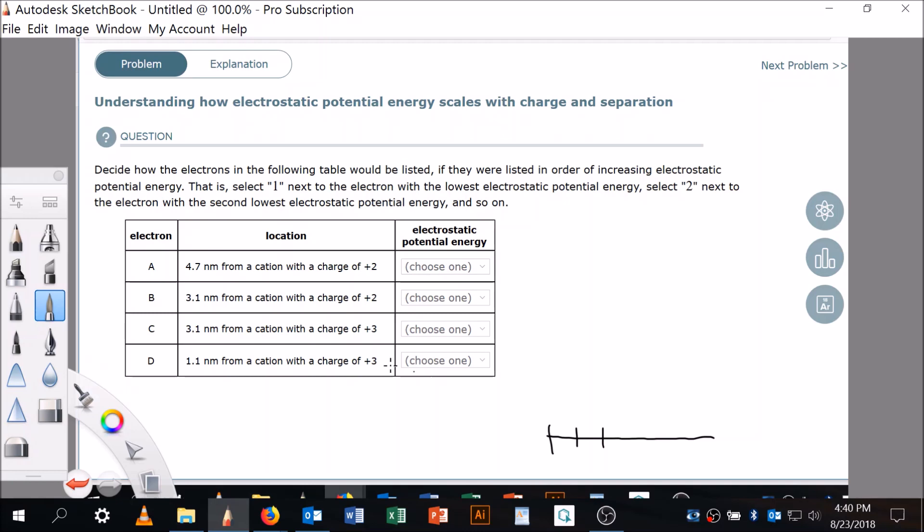It's 1.1, so it looks like I've got—decide how electrons in the following table would be listed. So in this one I've got an electron, which I'm going to draw as a little black ball. It's got a minus on it, and it is 1.1 nanometers away from a cation with a charge of plus three. So I'm going to go to right about here. I'm going to do this a different color. Plus three. Let's go back to black now.